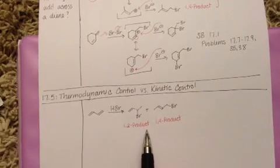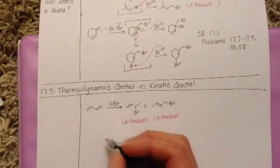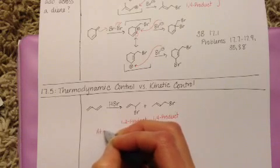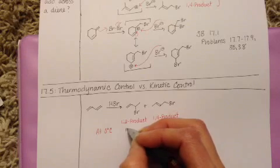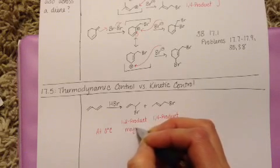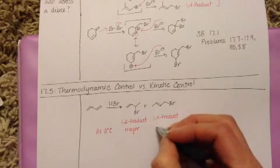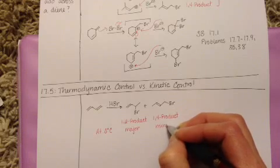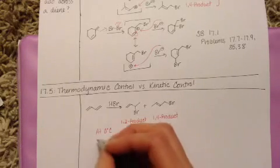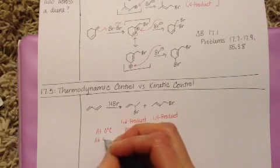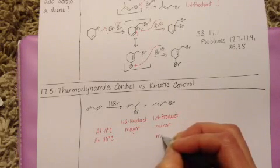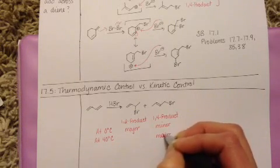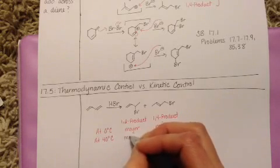So, we have the 1,2 and the 1,4 product and if we do this reaction at 0 degrees, we see that the major product is the 1,2 addition product and the 1,4 product is minor. If we do this reaction at 40 degrees we see the opposite, the major product is the 1,4 product and the minor product is the 1,2.